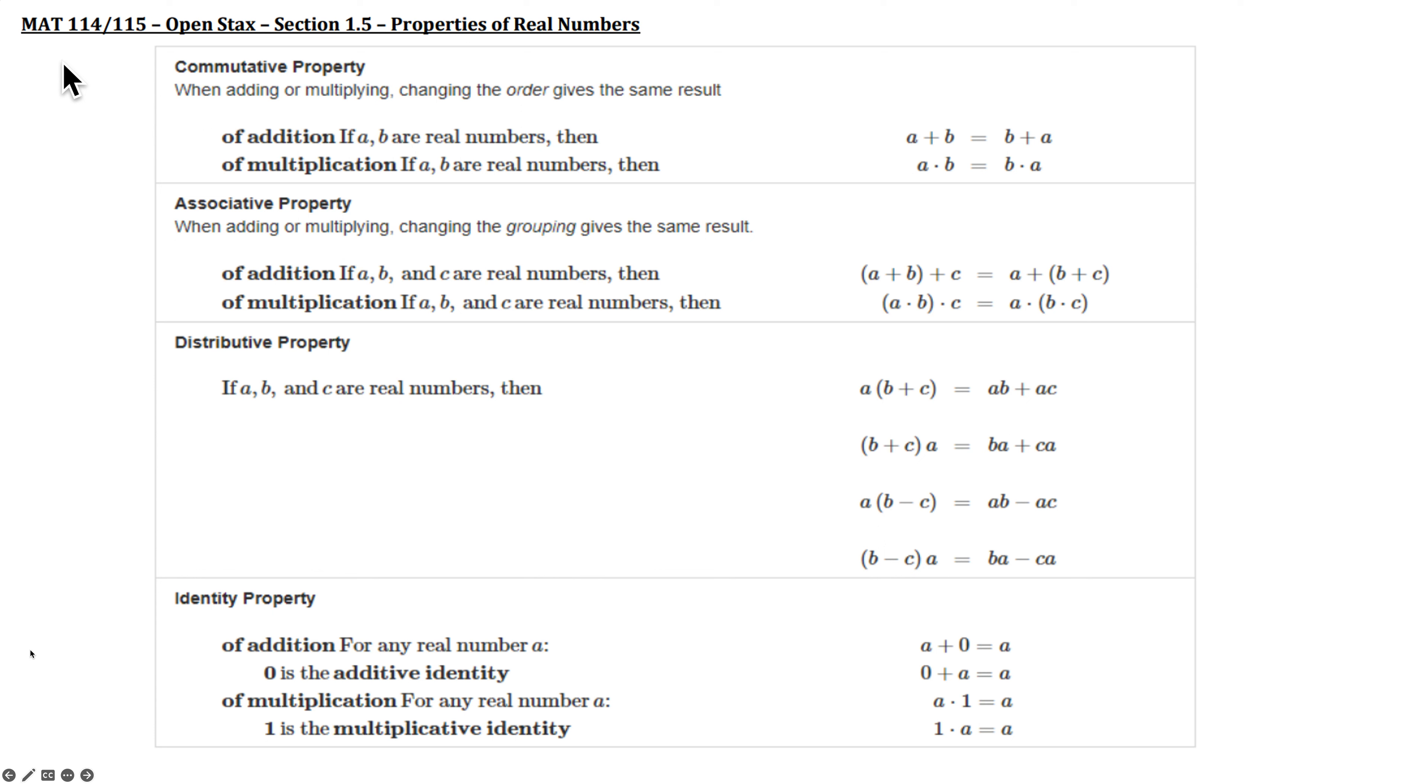All right, here we're at section 1.5, properties of real numbers. So the commutative property is the first one we're going to talk about. We kind of looked at this a little bit earlier. When you're adding or multiplying, changing the order, the physical order in which your numbers appear, will still give you the same result.